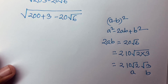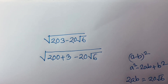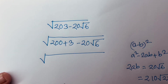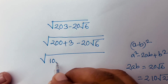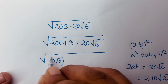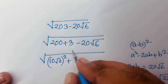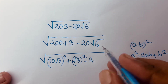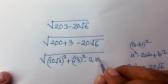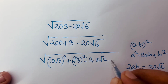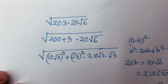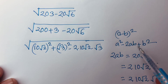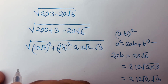So square root of 200 equals (10 square root 2) squared, and 3 equals (square root 3) squared, minus 2ab where a is 10 square root 2 and b is square root 3. According to the identity, a squared plus b squared minus 2ab equals (a minus b) whole square.